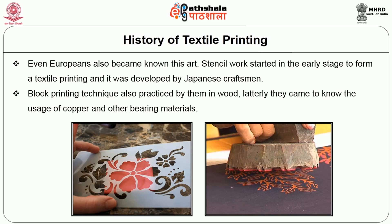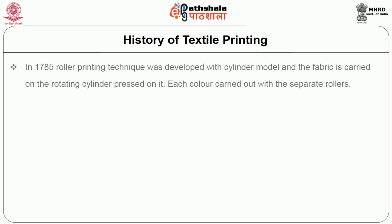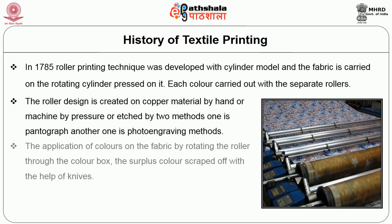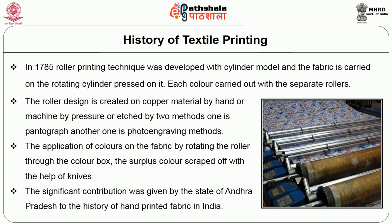Block printing techniques were also practiced using wood; later, the use of copper and other bearing materials came into use. In 1718, roller printing technique was developed with a cylinder model — the fabric is carried on a rotating cylinder with each color carried out on separate rollers. The roller design is created on copper material by hand or machine, by pressure or etched using two methods: photography and photo engraving. The significant contribution to the history of hand-printed fabric in India was given by the state of Andhra Pradesh.